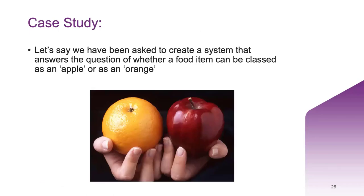Let's say we've been asked to create a system that answers the question of whether a food item can be classed as an apple or as an orange. This might be a really simple question, but it will help us understand how to choose a model and train our dataset. This question-answering system is called a model, and it was created by a process called training. The goal of training is to create an accurate model that answers our questions correctly most of the time.